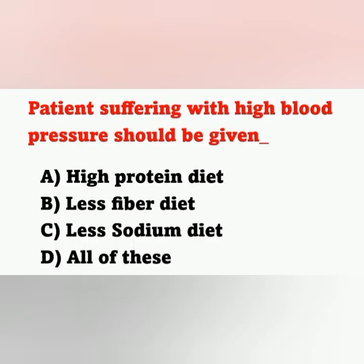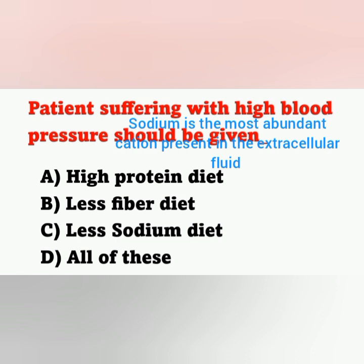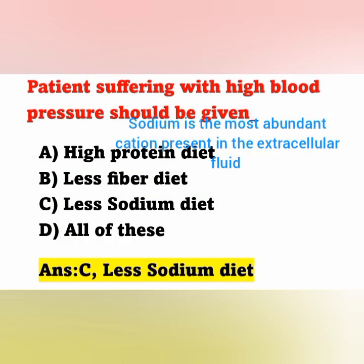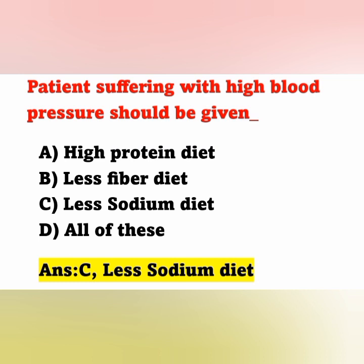Next question: A patient suffering with high blood pressure should be given which diet? Options: option A high protein diet, option B less fiber diet, option C less sodium diet, option D all of these. The correct answer is option C, less sodium diet. Sodium is the most abundant mineral in extracellular fluid. Advising the patient to avoid sodium-rich diet reduces extracellular sodium content, reduces body edema, and helps manage hypertension.